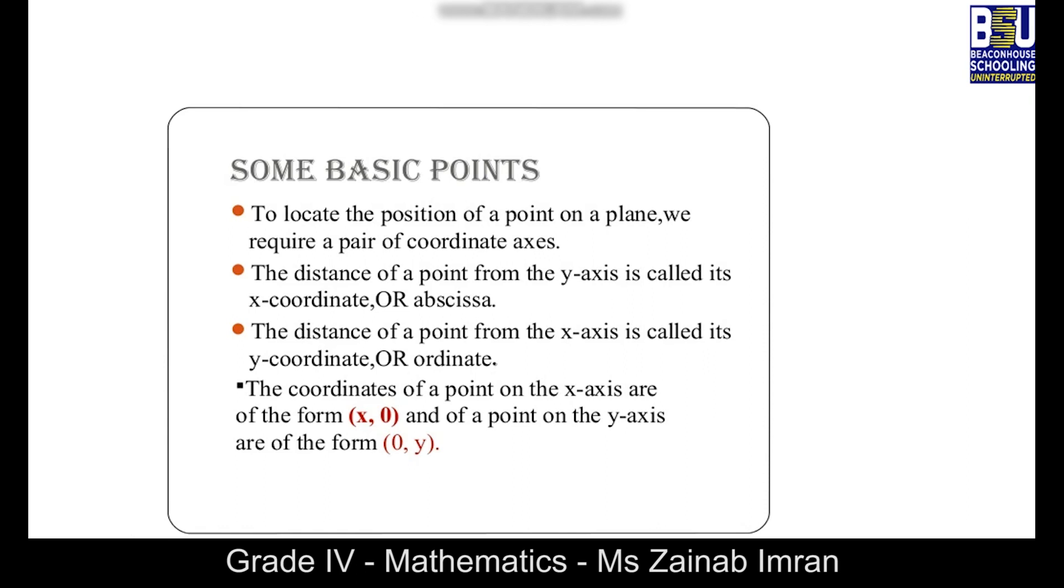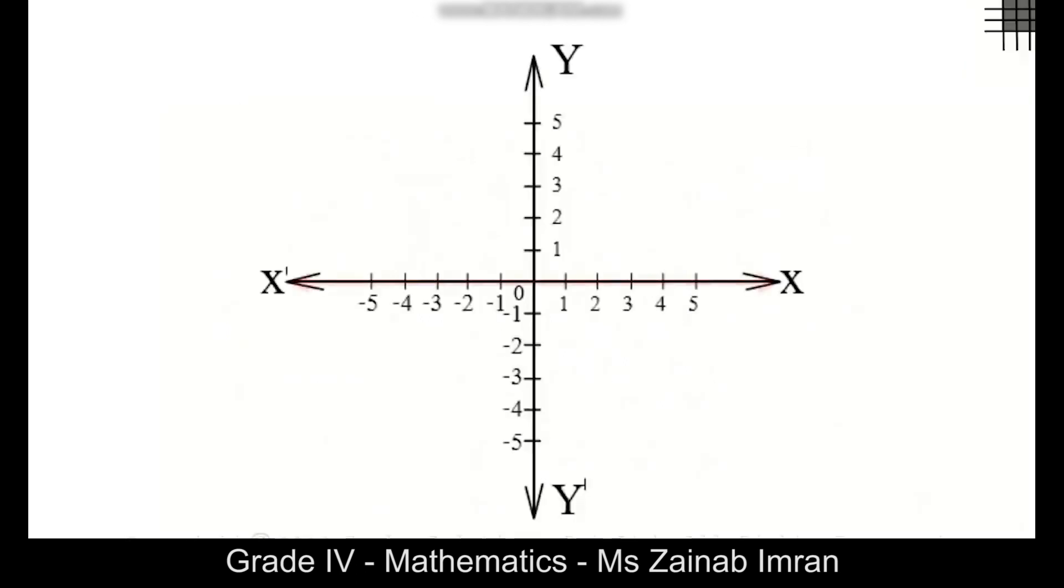The distance of a point from the x-axis is called its y-coordinate or ordinate. The coordinates of a point on the x-axis are of the form (x, 0), and of a point on the y-axis are of the form (0, y).